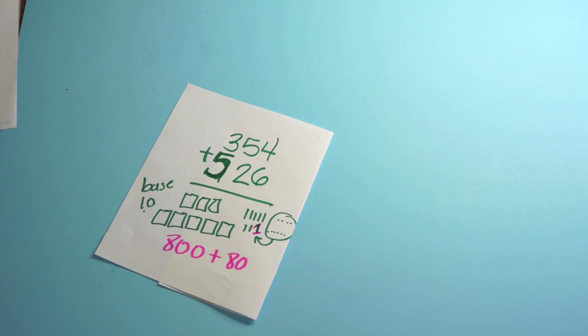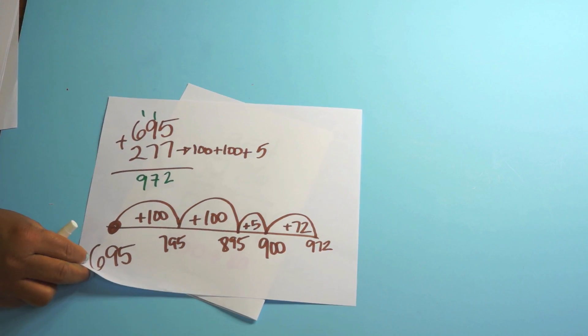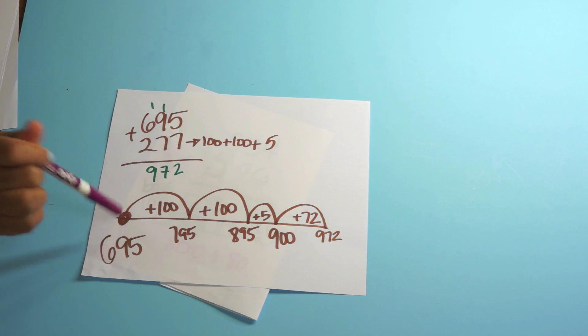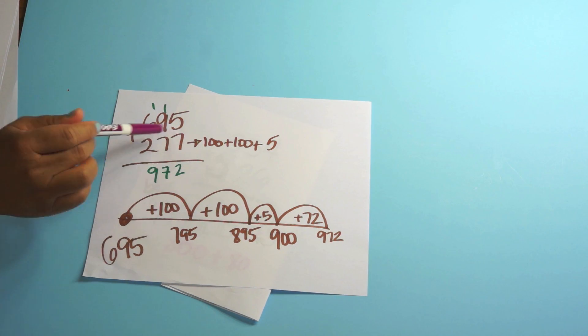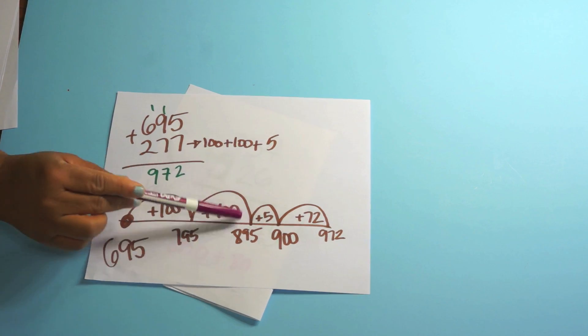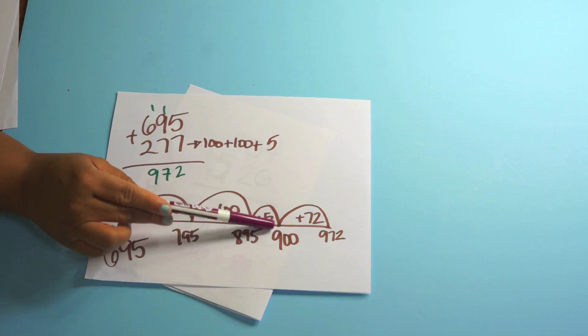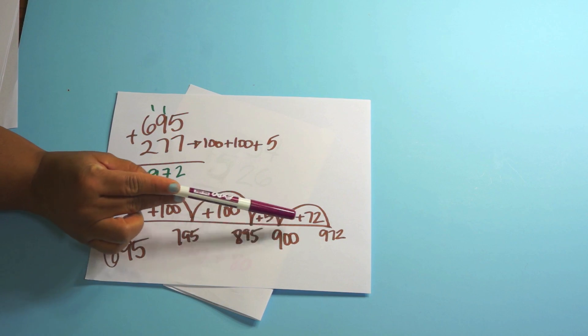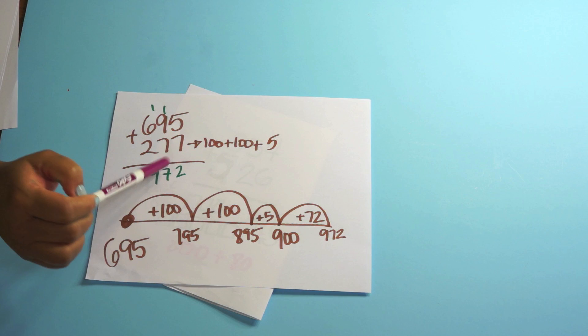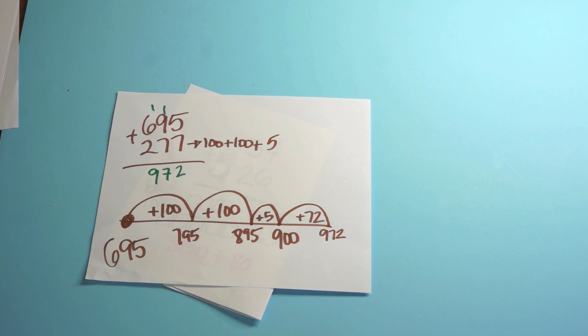Here's another way that kids should know how to add. Here's using the open number line. You have 695 plus 277. You start at 695 and the 277 is going to be your jumper number. Me and the kids call it jumper number. And then they jump 100 and 100 plus 5 to get us to 900 plus 72. We get 972. When we check it with the paper and pencil method, we get 972. Remember, common core says solve one way. Check another.